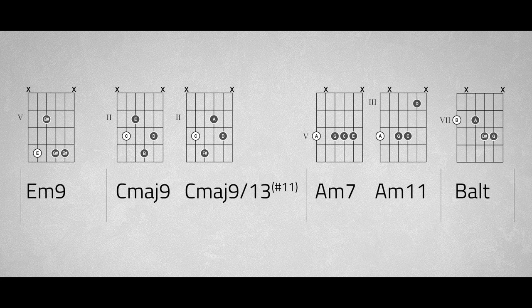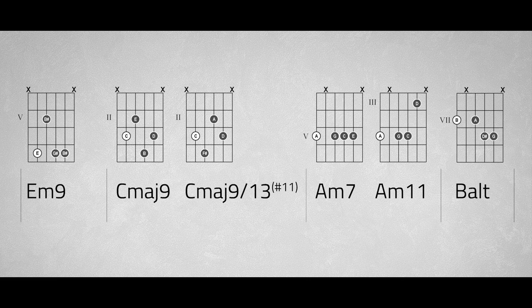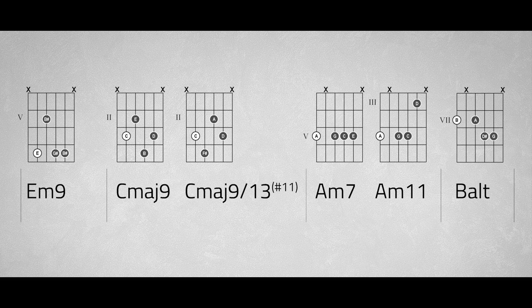E minor 9, C major 9 and C major 13 sharp 11, A minor 7, A minor 11, and the B altered chord. In this case, all the extra notes come from the natural minor scale, except for the B.